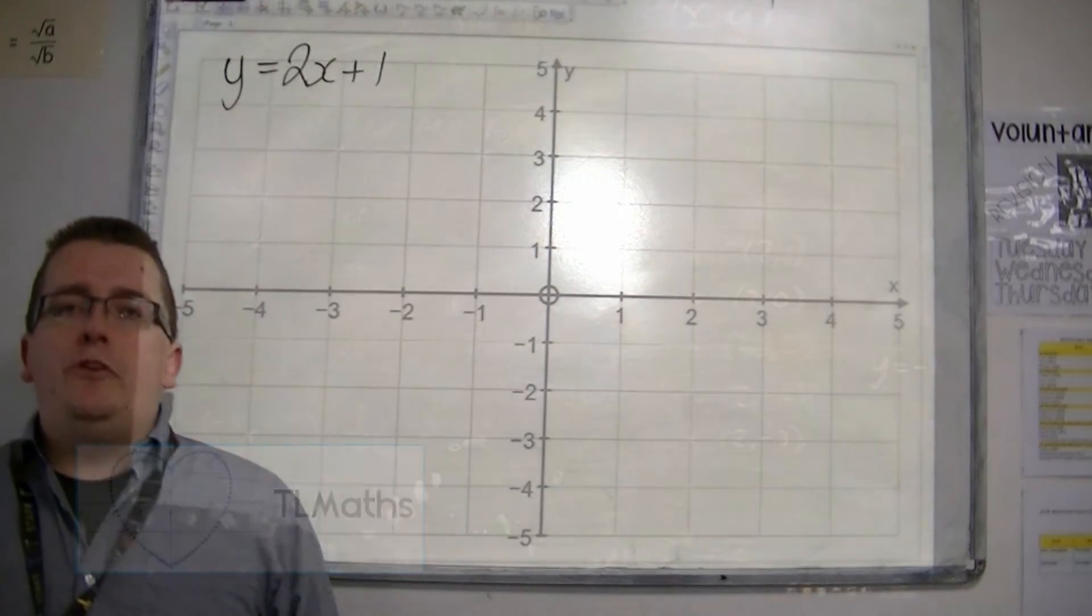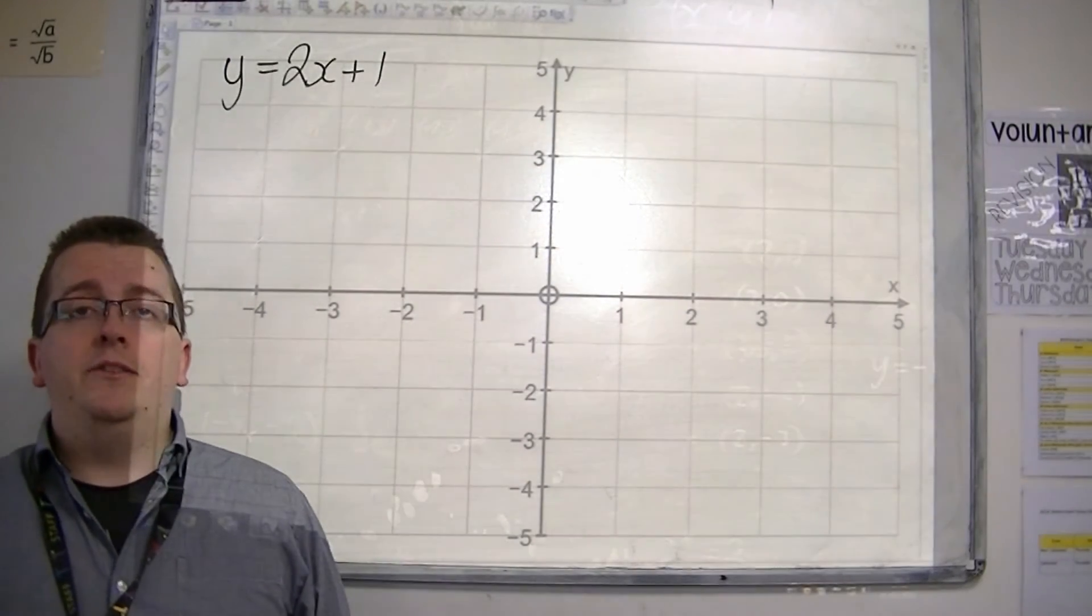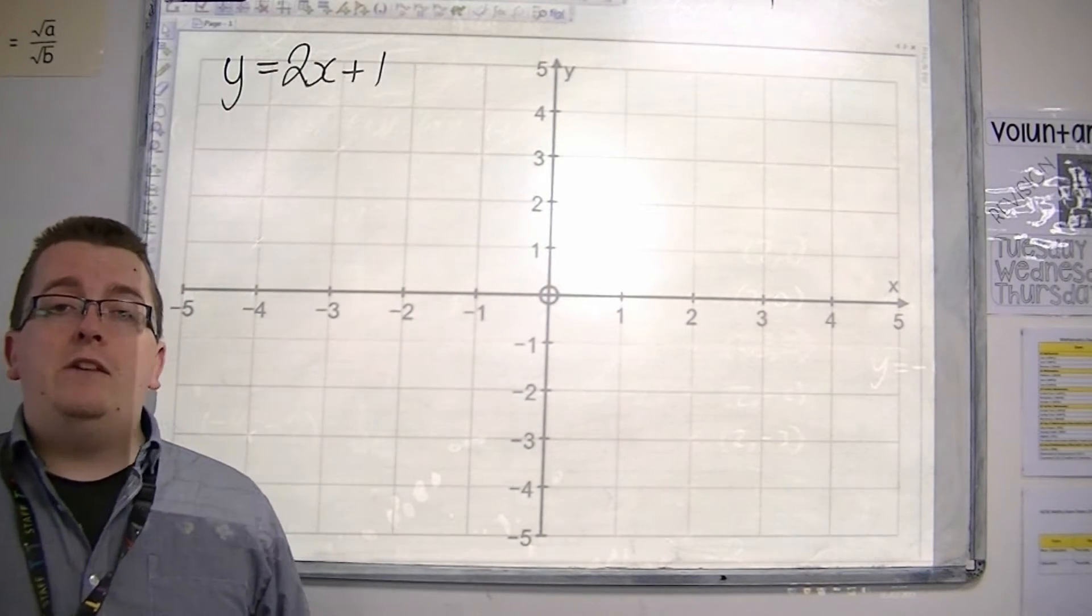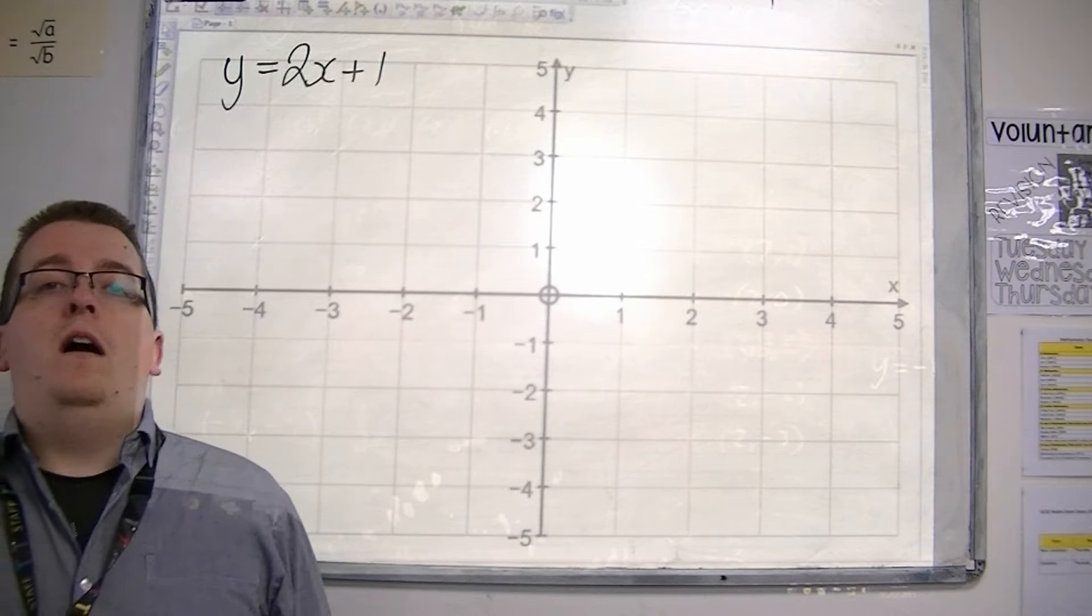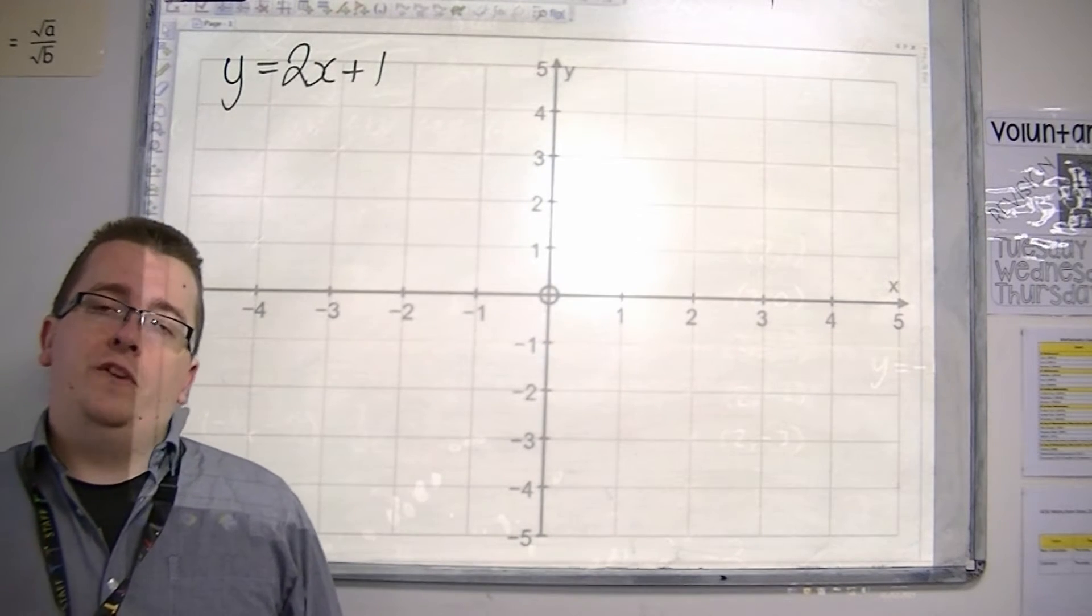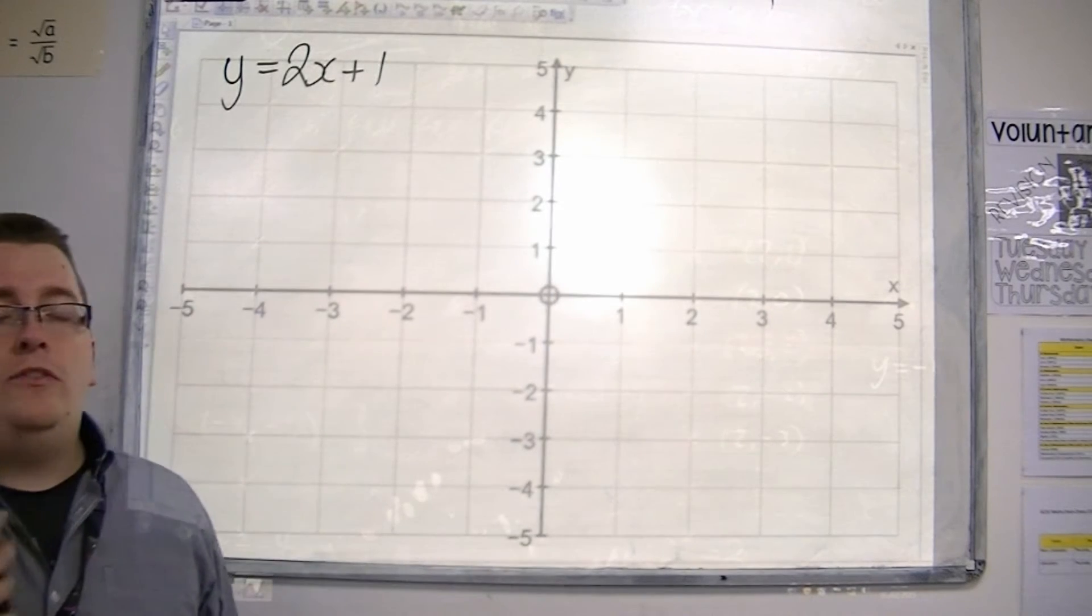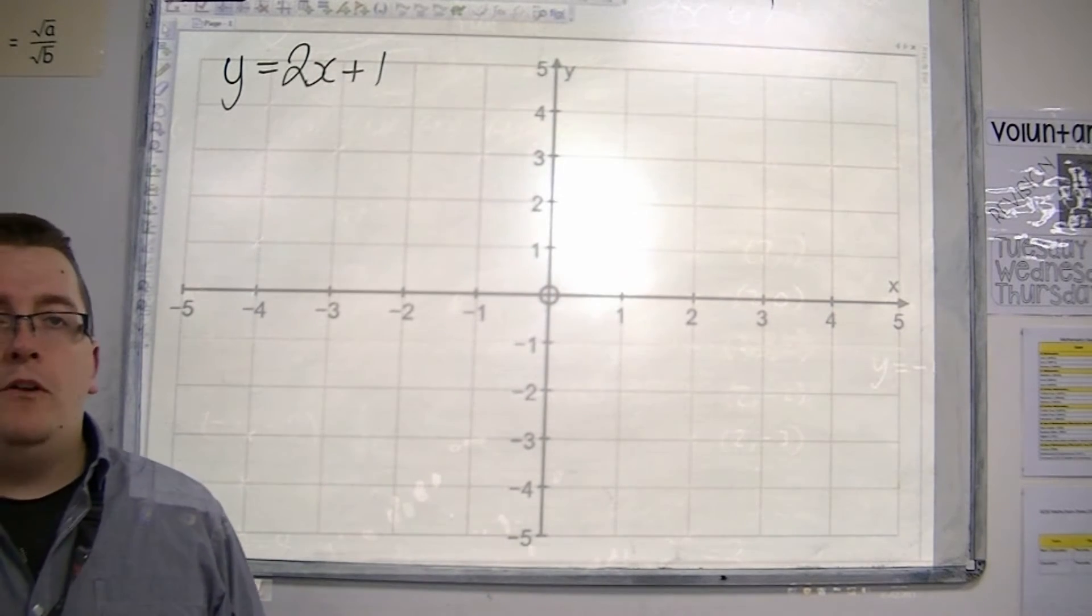In the previous video, I introduced horizontal and vertical lines and the equations for these. Now, not all lines that we have to draw in GCSE maths are going to be horizontal or vertical. They may well be diagonal, and in which case there's a different type of equation that comes about from that.